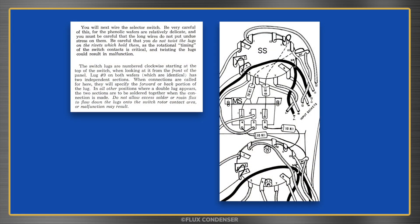You will next wire the selector switch. Be very careful of this, for the phenolic wafers are relatively delicate and you must be careful that the long wires do not put undue stress on them. Be careful that you do not twist the lugs on the rivets which hold them, as the rotational timing of the switch contacts is critical and twisting the lugs could result in malfunction. The switch lugs are numbered clockwise starting at the top of the switch, when looking at it from the front of the panel. Lug number 9 on both wafers, which are identical, has two independent sections. In all other positions where a double lug appears, the two sections are to be soldered together when the connection is made. Do not allow excess solder or rosin flux to flow down the lugs onto the switch rotor contact area or malfunction may result. I'll be careful, I promise.